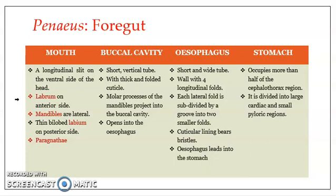The labrum is a chitinous plate present on the anterior side of the mouth opening. On the sides you have mandibles — one on each side — and on the posterior side, just like the lower lip, you have the labium. The labium is a bilobed structure and each lobe is referred to as a paragnath. So the mouth is a longitudinal slit on the ventral side, positioned between the third and fourth cephalic segments, guarded by the labrum anteriorly, the bilobed labium posteriorly, and a mandible on each lateral side.